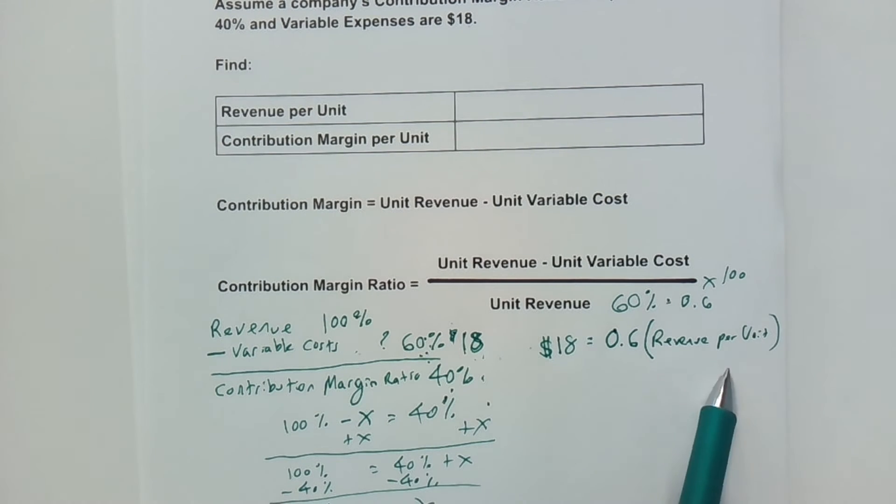So I'm setting my $18 is equal to 60%, which is 0.6, 60% of the revenue per unit. In other words, 60% of this 100% is the $18.